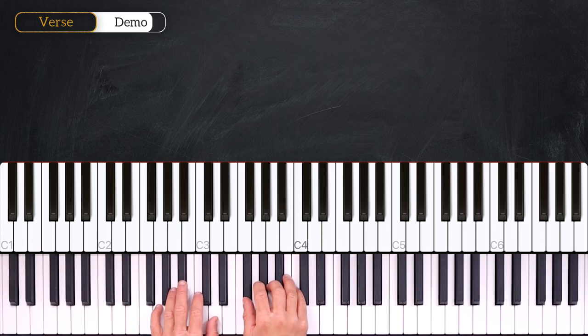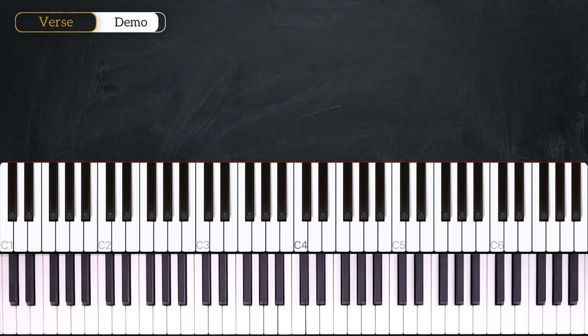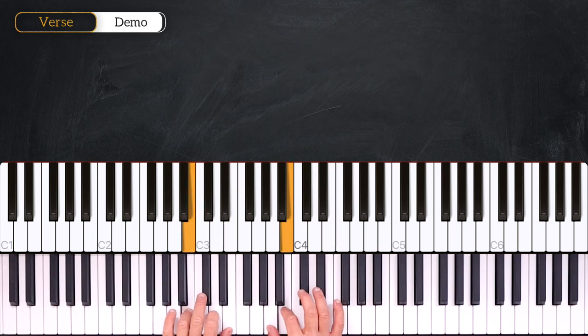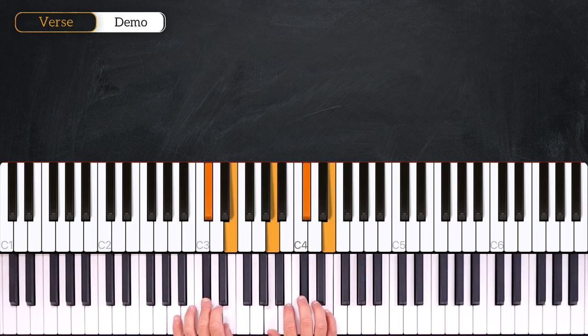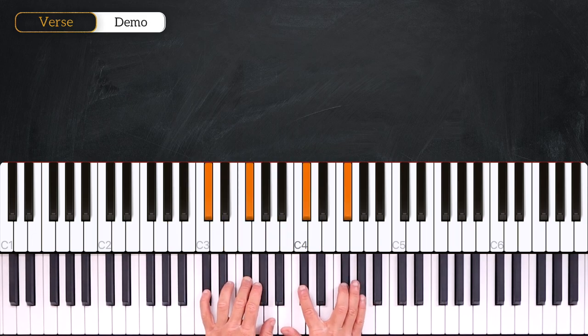All right guys, so in this first part we are going to learn the introduction and the verse. We are in the key of A major, so we have F sharp, C sharp and G sharp.